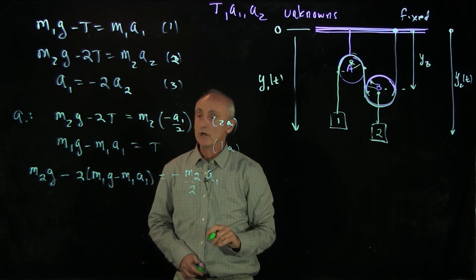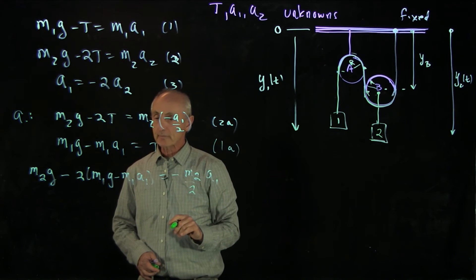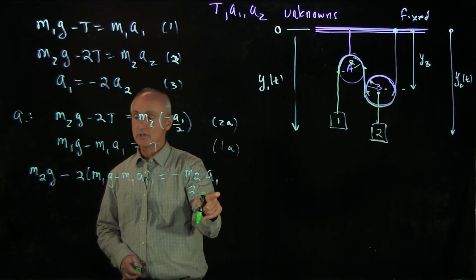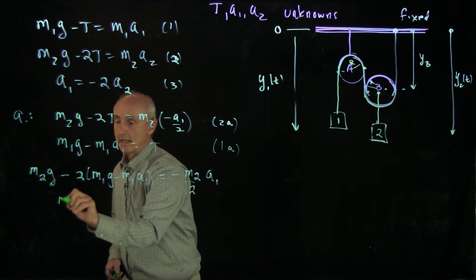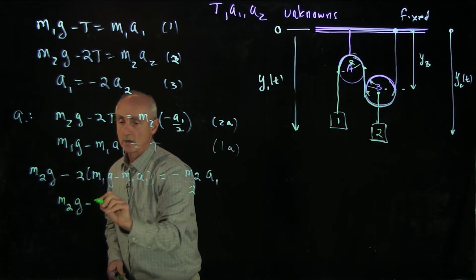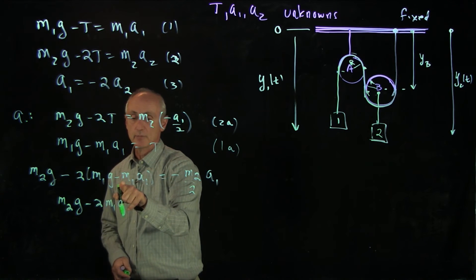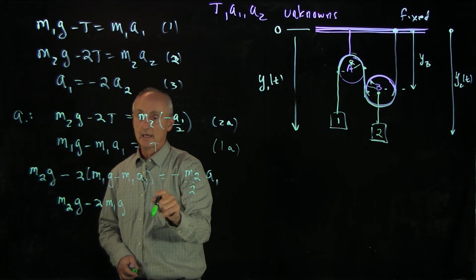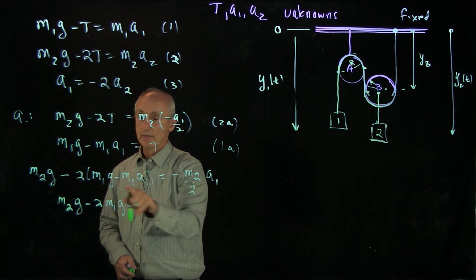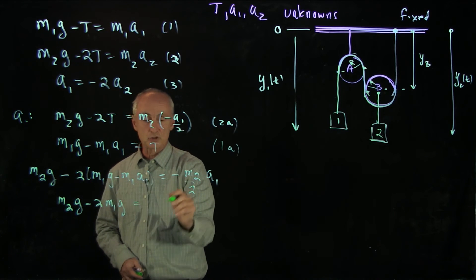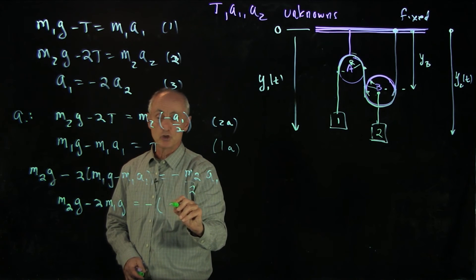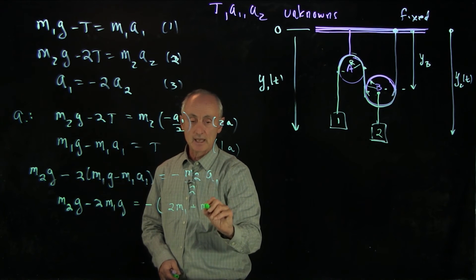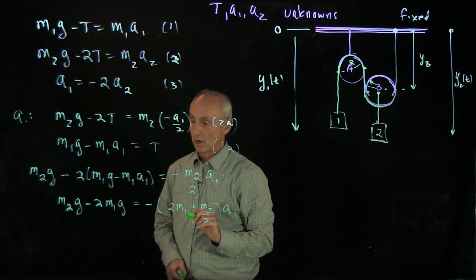And now I'd like to collect my a1 terms. And what I have over here, let's bring all the a1 terms to this side. And I get m2g minus 2m1g. I have a plus, so I'm going to bring that over to this side. And I get equal to, that's plus plus, so I'll have two minus signs. And I'll have 2m1 plus m2 over 2a1.